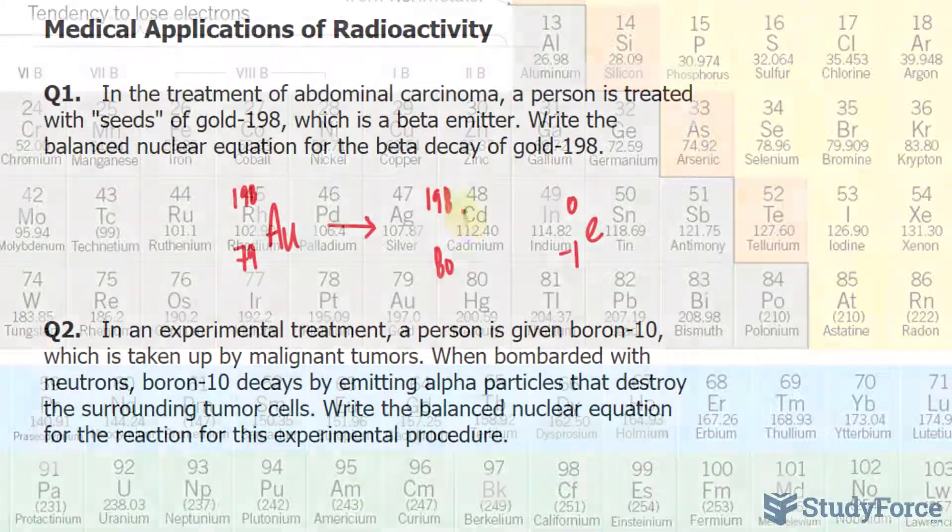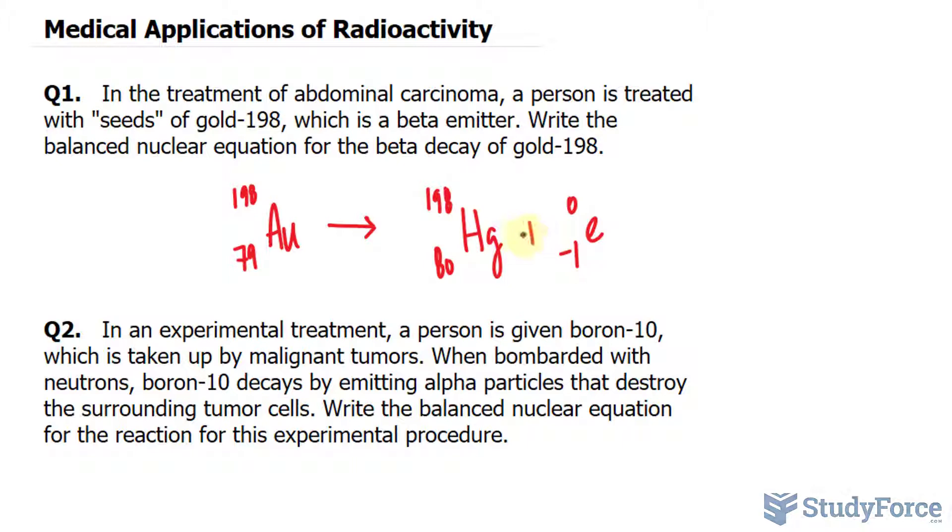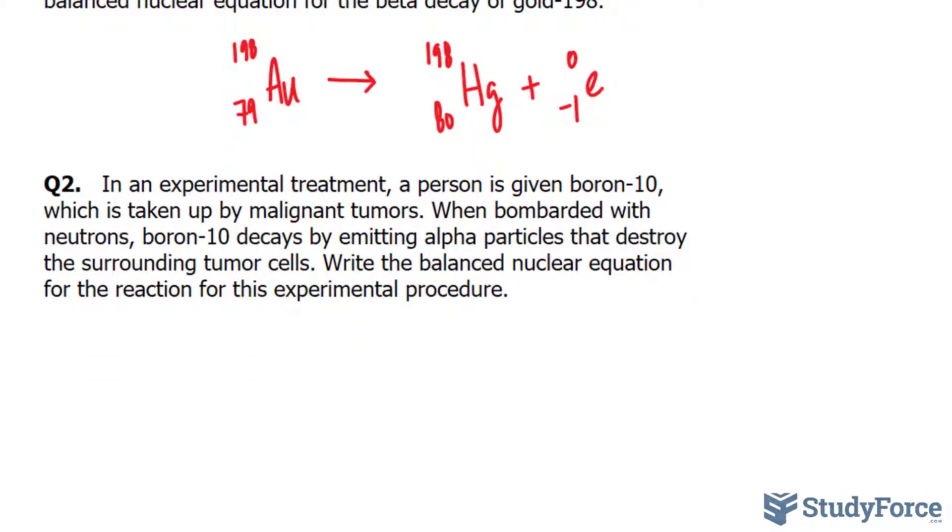So in question 2, in an experimental treatment, a person is given boron-10, which is taken up by malignant tumors. When bombarded with neutrons, boron-10 decays by emitting alpha particles that destroy the surrounding tumor cells. Write the balanced nuclear equation for the reaction for this experimental procedure.